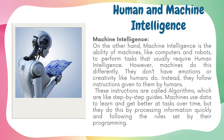Machine intelligence, on the other hand, is the ability of machines — like computers and robots — to perform tasks that usually require human intelligence. However, machines do this differently. They don't have emotions or creativity like humans do. Instead, they follow instructions given to them by humans. These instructions are called algorithms, which are like step-by-step guides. Machines use data to learn and get better at tasks over time by processing information quickly and following the rules set by their programming.